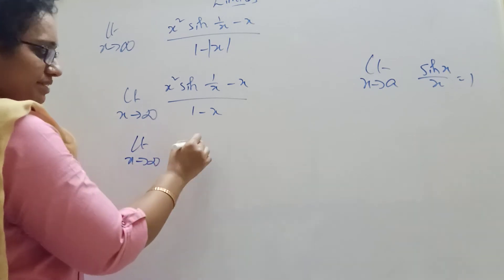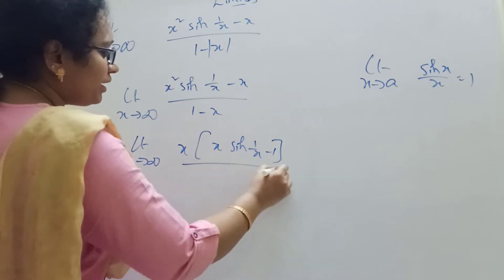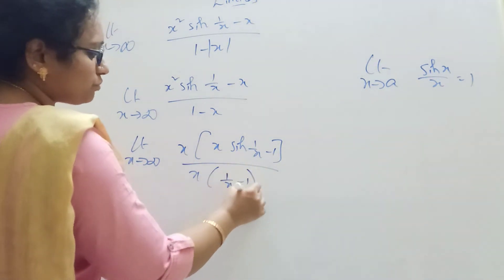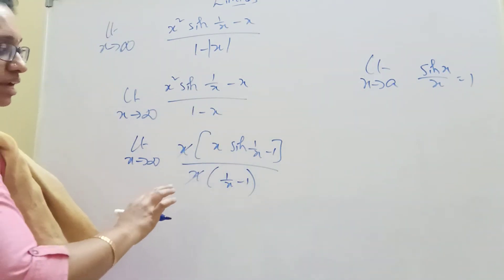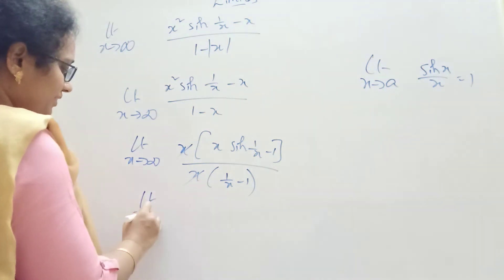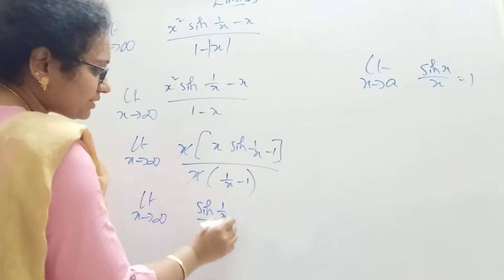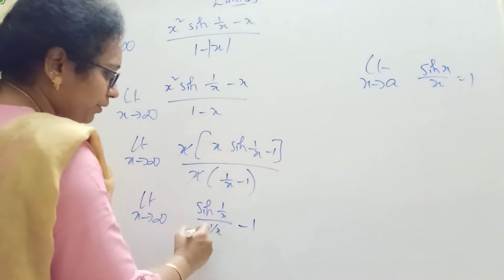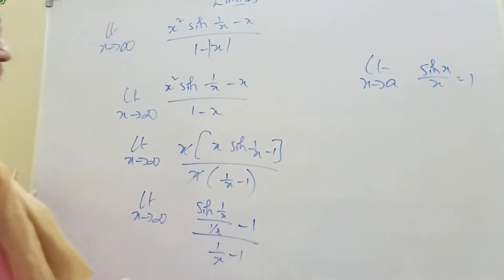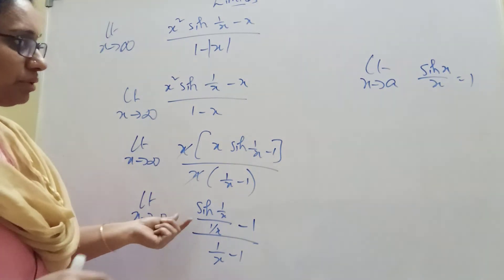The limit x tends to infinity — x common. And then sine 1 by x minus 1 by x, the limit x tends to infinity. 1 by x minus 1, then x is cancelled. If x is now, the limit x tends to infinity — sine 1 by x divided by 1 by x. By x, we need to write 1 by x directly. 1 by x minus 1. I understand this part. You can see sine value is 1.